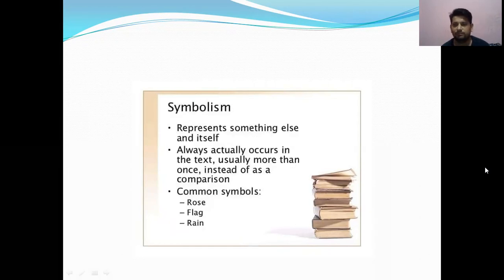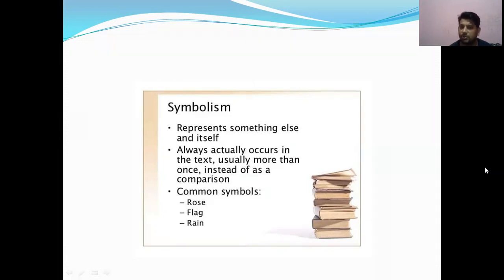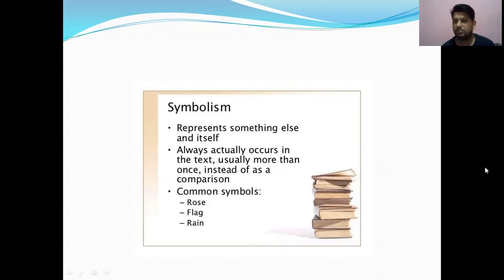Next is symbolism — also a figure of speech used in literature. Symbolism is when something represents something else beyond itself and usually occurs more than once in a text. Common symbols include a rose, a flag, and rain.